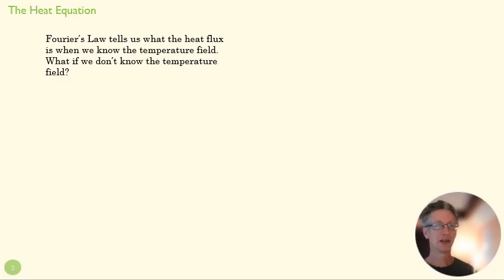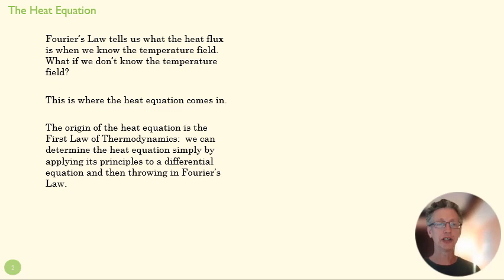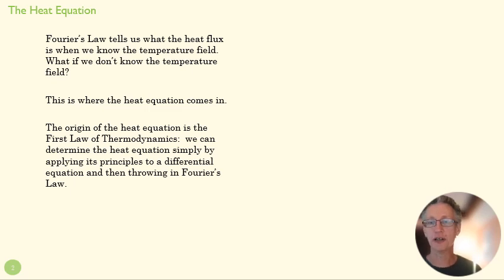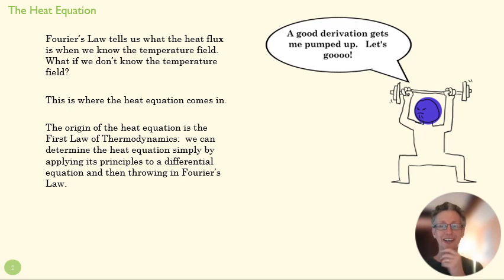Fourier's law is that rate equation that tells us the flux when we know the temperature field. If we want to know the temperature field, we need more — and that's our heat equation. The origin of the heat equation is the first law. We can determine the heat equation basically by taking the first law and applying it to a volume that has been shrunk down to an infinitesimal size, then throwing in Fourier's law to get the variables that we want.